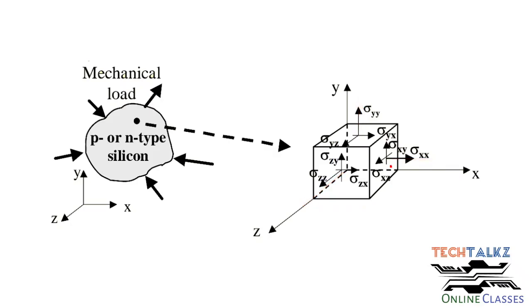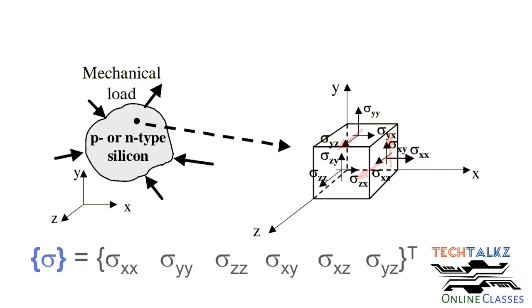The shear stress components are Sigma XY, Sigma XZ, and Sigma YZ. In total, we have 6 independent stress components, which form a stress tensor.